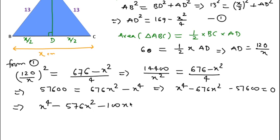x to the power 4 minus 576x square minus 100x square minus 57600 equals 0. If we take x square common from the first two terms and minus 100 common from the last two terms, we get x square times (x square minus 576) minus 100 times (x square minus 576) equals 0.